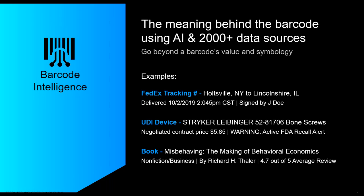Our objective is threefold: first, to identify what that barcode is — using one of our APIs you can throw any symbology at it and it will come back with possible meanings, such as whether it's a shipping label, medical device, or book. Second, to decode the information — some barcodes like UDI contain multiple fields such as a product identifier and creation date. Third, to enrich that data — taking the product ID and enriching it to tell you exactly what that device is and its properties.